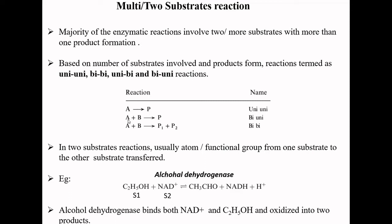In another example, when A and B are two substrates and one product is formed, that type of reaction is called a bi-uni reaction. In a third case, when two substrates A and B participate in the enzymatic reaction and two products, P1 and P2, are synthesized, that type of reaction is called a bi-bi reaction.